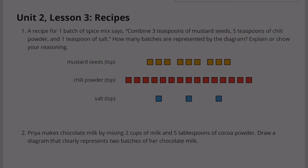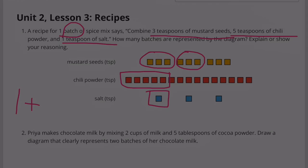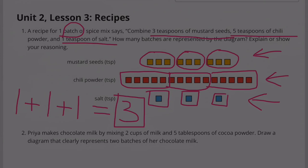Number one: A recipe for one batch of spice mix says combine three teaspoons of mustard seed, five teaspoons of chili powder, and one teaspoon of salt. How many batches are represented by the diagram? We needed three teaspoons of mustard seeds, five teaspoons of chili powder, one teaspoon of salt for one batch. Let's take three more teaspoons of mustard seed, five more teaspoons of chili powder, and one more teaspoon of salt for another batch. Finally, three teaspoons of mustard seed, five teaspoons of chili powder, and one teaspoon of salt gives us a total of three batches. The diagram itself explains the reasoning.